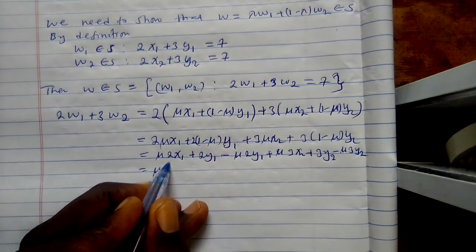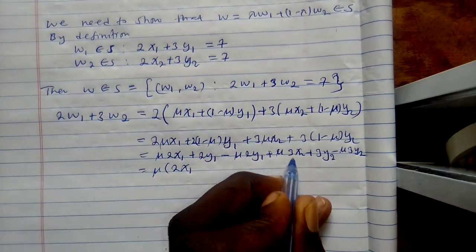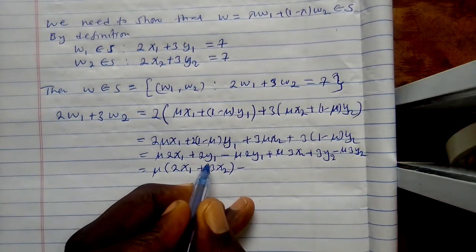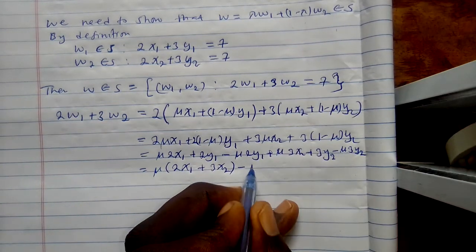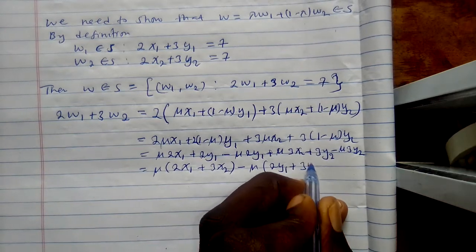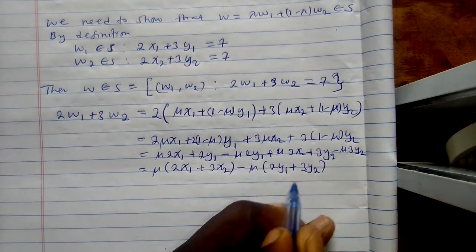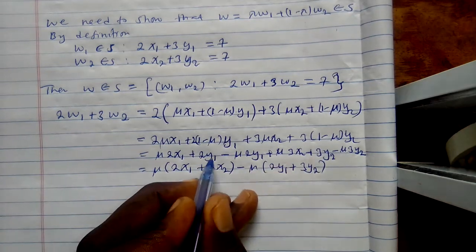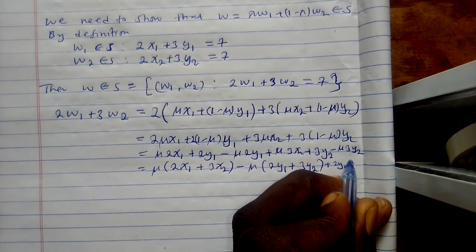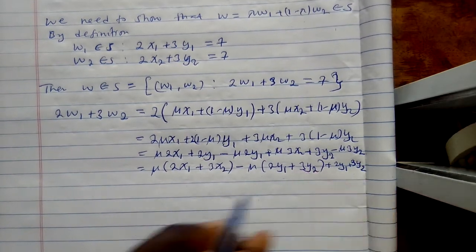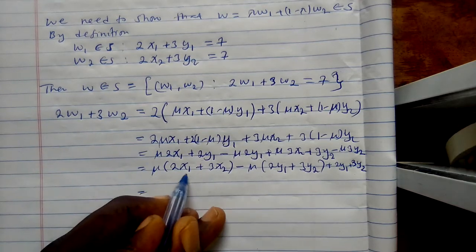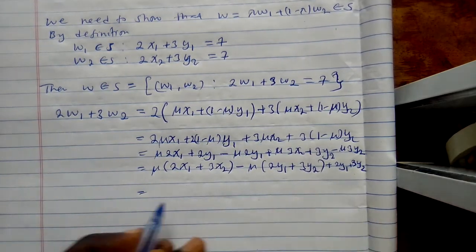So I can combine this and this. I can combine this and this one here and this one here which has a 3. I'll have mu into (2X1 plus 3X2) minus mu into (2Y1 plus 3Y2), then plus 2Y1 plus 3Y2. Is that clear? But by definition this one is a 7, by definition it's also 7, by definition it's also 7.